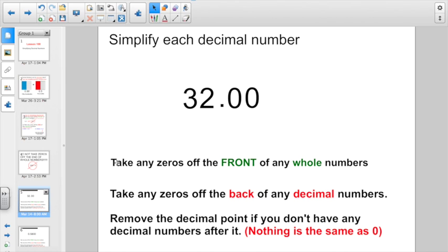Simplify each decimal number. Our rules: Take any zeros off the front of any whole numbers. I don't have any zeros at the front of my whole number. Rule number two, take any zeros off the back of any decimal numbers. This is just 32 and 0 hundredths, right? I don't need that zero. And then it says, remove the decimal point if you don't have any decimal numbers after it, because nothing is the same as zeros. I don't want to say 32 and nothing. I just want to say 32.